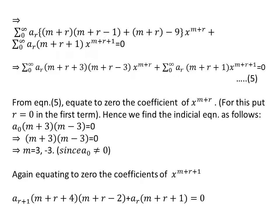From equation five, we equate to zero the coefficient of x to the power m plus r. For this we put r equal to zero in the first term and we get a zero times m plus three times m minus three equal to zero. So we get m plus three into m minus three equal to zero because we know that a naught cannot be equal to zero.